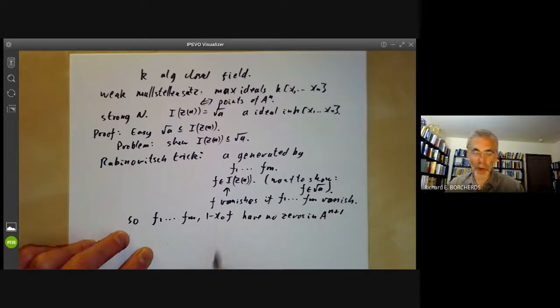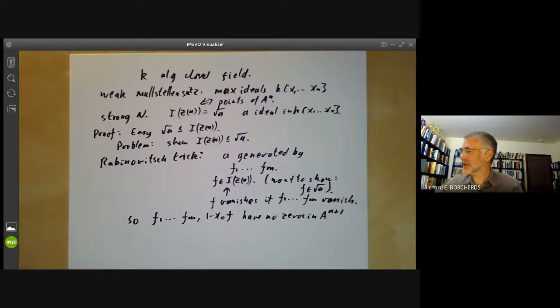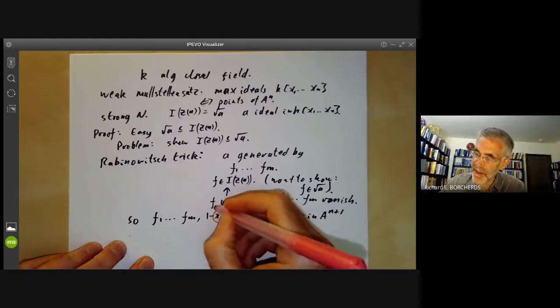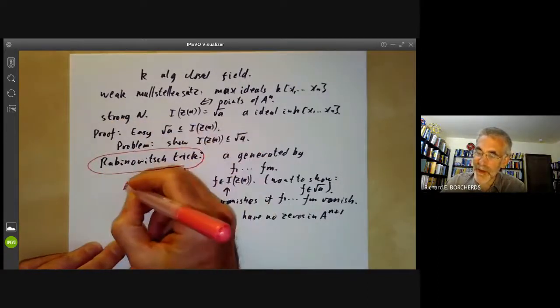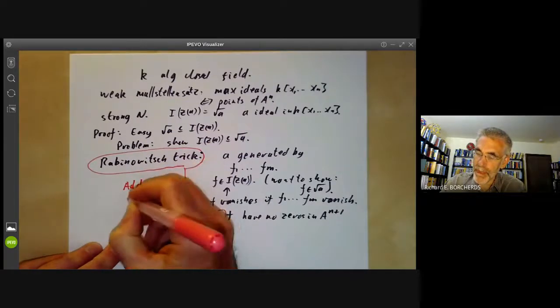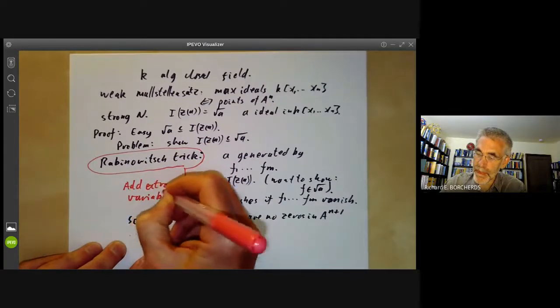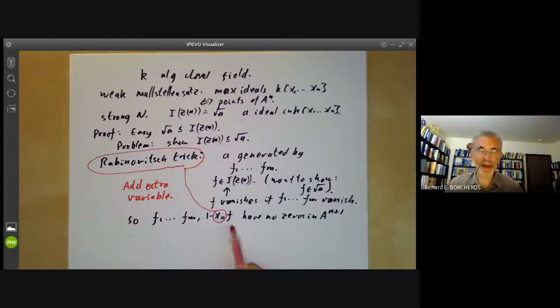Well, what's this x0? Well, this x0 is Rabinovitch's cunning extra idea. So Rabinovitch's trick is this: we add an extra variable. It's kind of funny because you're proving something in n dimensions by jumping up to n+1 dimensions.